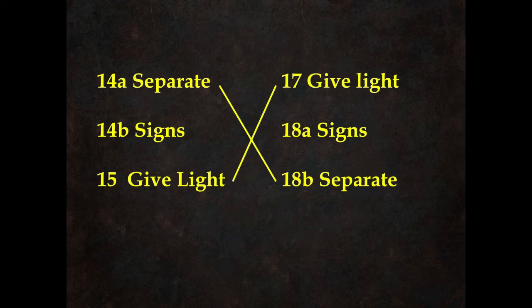Amazingly, the two genealogies of Jesus — one in Matthew and one in Luke — are a chiasm because they're flipped. One starts with Abraham and goes to Christ, and one starts at Christ and goes all the way back to Adam, because they're done in reverse order.